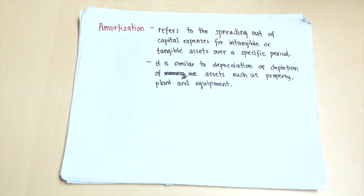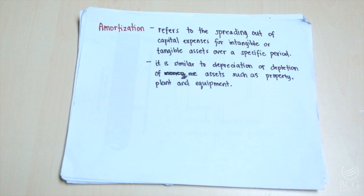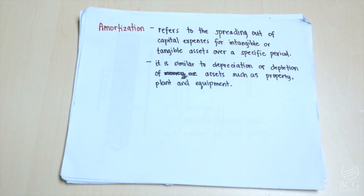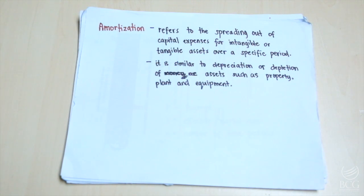Amortization refers to the spreading of capital expenses for tangible or intangible assets over a specific period. It is similar to depreciation or depletion of assets such as property, plant, and equipment. It is also the process of reducing or accounting for an amount, usually a financial debt, over a period according to a plan.